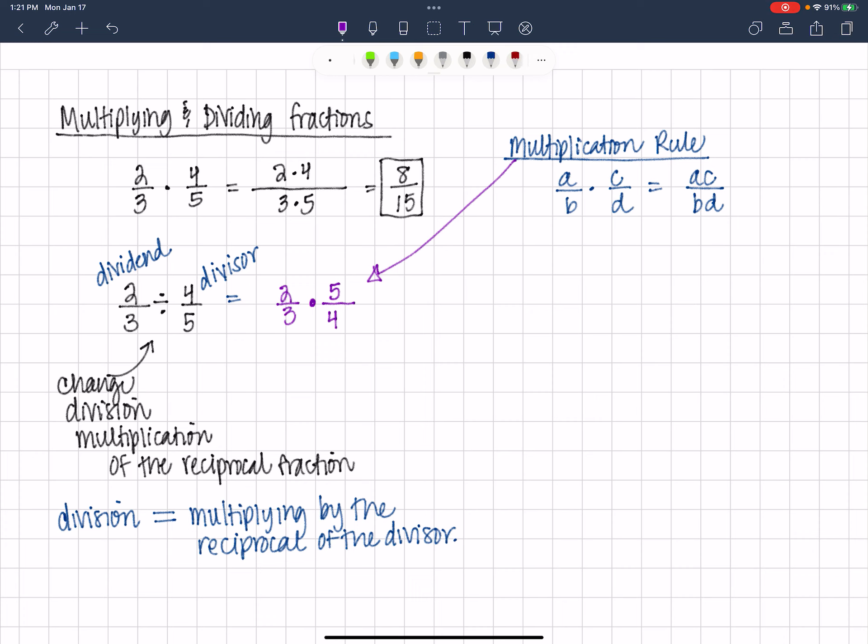And we're going to multiply straight across, 2 times 5 over 3 times 4. And remember, 4 is a composite number. So if I change 4 to its prime factorization, 4 is going to become 2 times 2. So instead of 3 times 4, I have 3 times 2 times 2. These 2s cancel out. And in the numerator, we have 5. And in the denominator, we have 6.